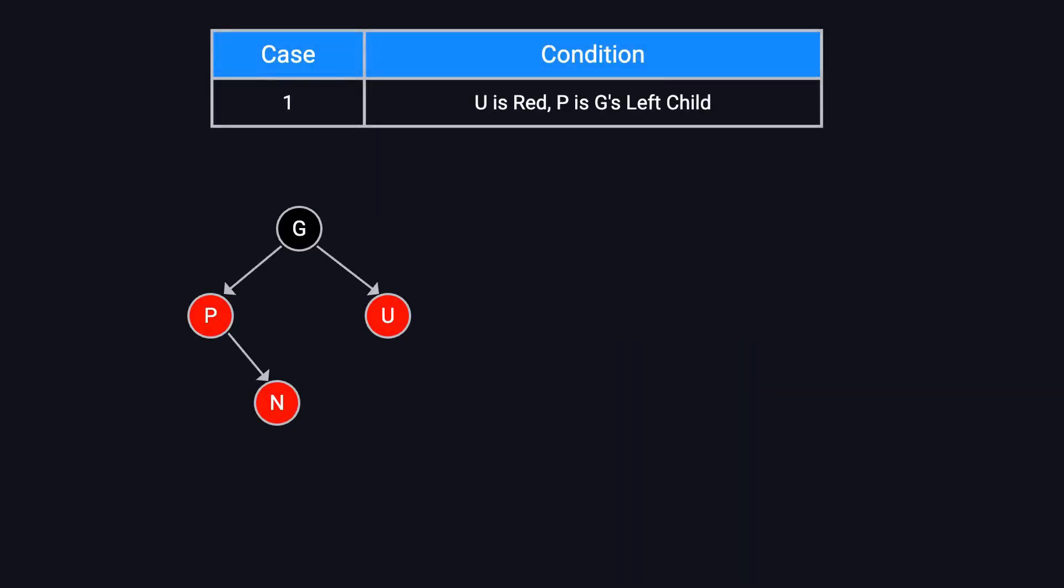Let's start with the cases where U is red. Case one. If U is red and P is G's left child, we fix it in three steps. Step one. Recolor both P and U to black.